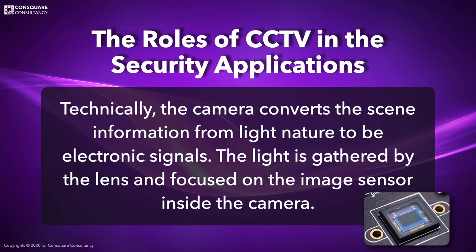In fact, CCTV cameras are not more than artificial eyes and sensors, equipped and well designed to support the security crew by adding extra capabilities like better detection features, reduced human errors, mitigated collusion, and less feebleness. Technically, the camera converts scene information from light into electronic signals. The light is gathered by the lens and focused on the image sensor inside the camera, collecting the light reflected from objects in the scene, then converting it to digital signals.